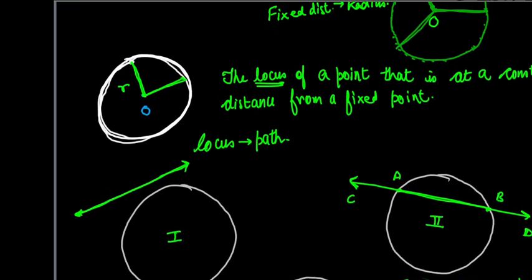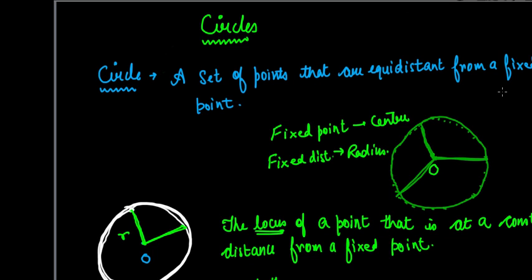This was an introductory lecture to circles. I hope you understood what a circle is, its components, and the different relations a line and a circle can have in the same plane. In the next video, we will take up the first theorem in this chapter — that the radius is perpendicular to the tangent at the point of contact. Thank you very much for joining me. Goodbye, stay healthy, stay smart, and do look forward to the next lecture.